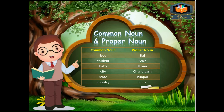'Baby' is common noun; 'Hyaan' is proper noun, because Hyaan is the specific name of a baby. 'City' is common noun; 'Chandigarh' is proper noun — it is the name of a city. 'State' is common noun; 'Punjab' is proper noun — Punjab is the name of a state.